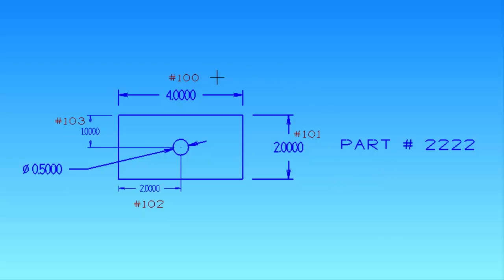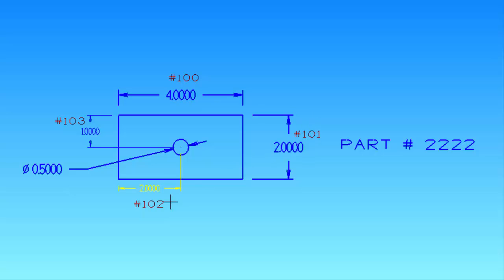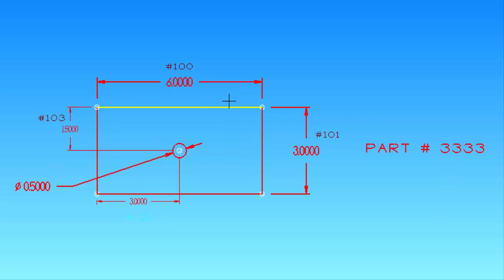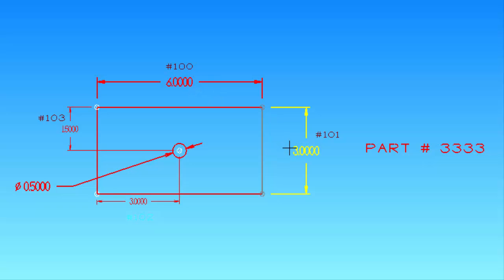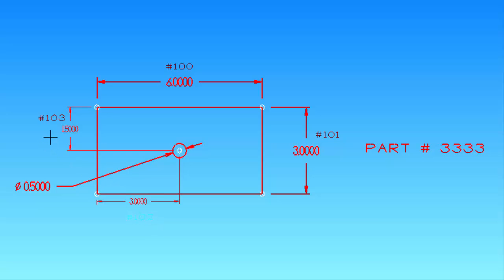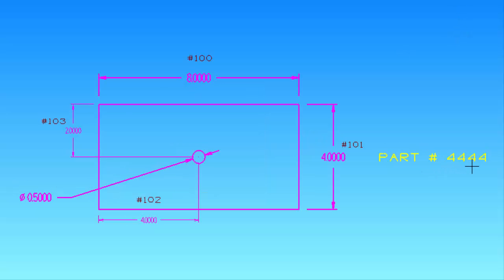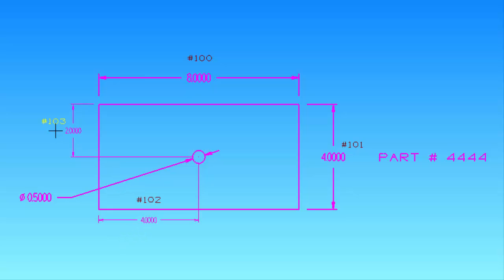For part number 2222, we assign variable #100 to the length, #101 to the width, #102 to the first direction of the hole location, and #103 for the second distance of the hole location. The same applies to part number 3333 — six inches gets #100, width #101, first direction of the hole #102, and second direction #103. And for part number 4444, the eight-inch length is #100, width #101, first location #102, and second location #103.